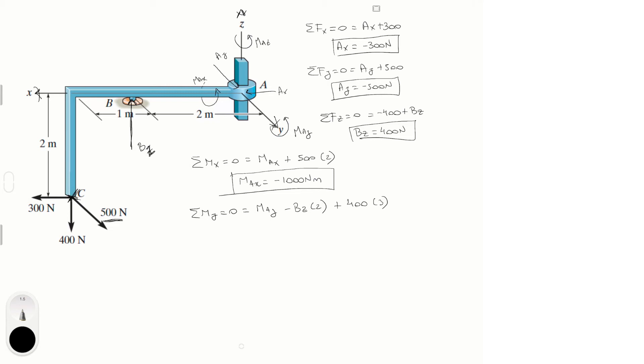And then the last one is minus 300 times 2. The 300 force is also trying to turn the system about the Y axis, and 2 is the distance from point C to the XZ plane. We already know BC from earlier, so we just solve for MAY.